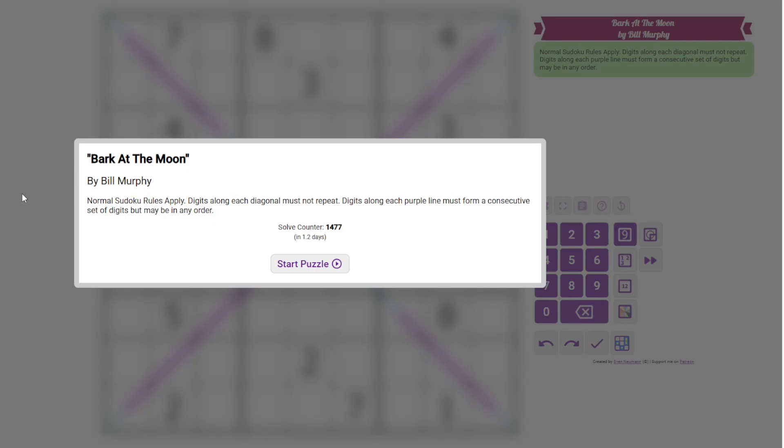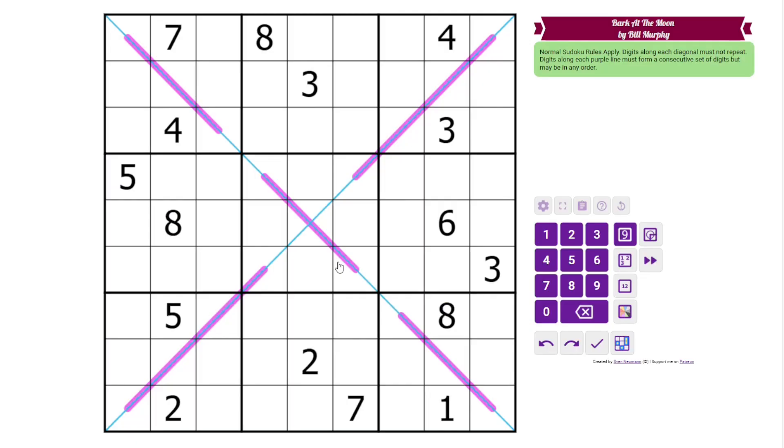But anyway, today's puzzle is Bark at the Moon by Bill Murphy. And this is a diagonal and Rinban Sudoku. So we have normal Sudoku rules, one to nine in each row, column, and three by three box.